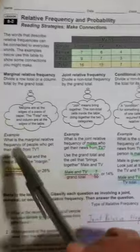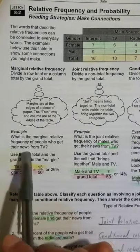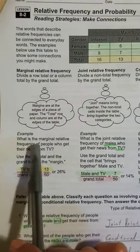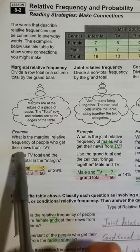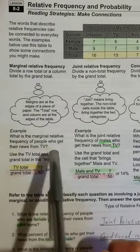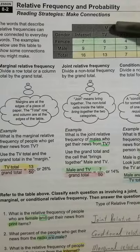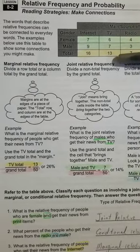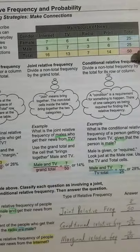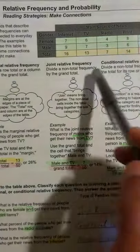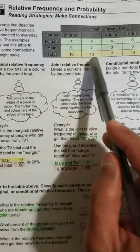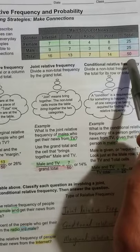In this case, the question asks: what is the marginal relative frequency of people who get their news from TV? You look at the total for TV, which is 13, divided by the grand total, which is 50.